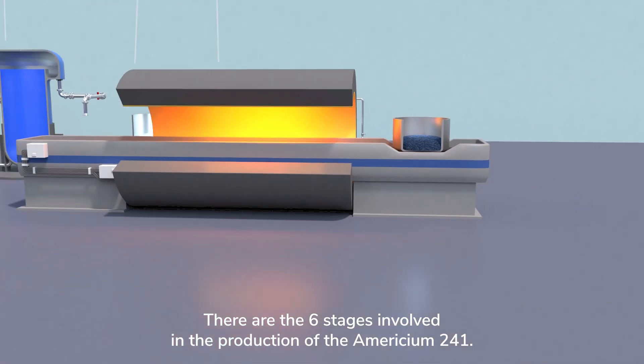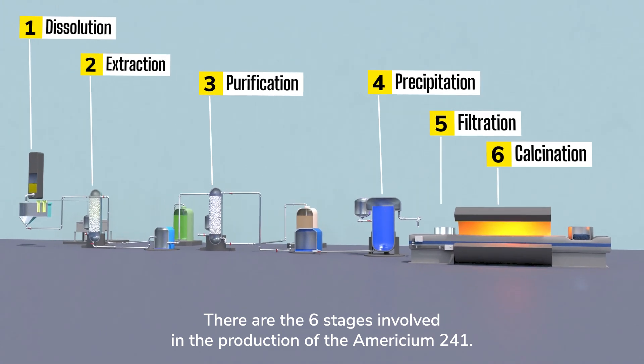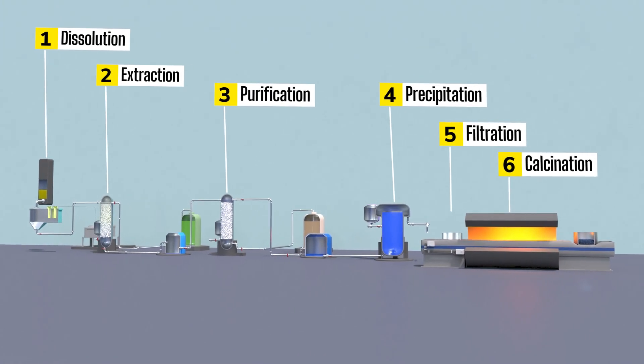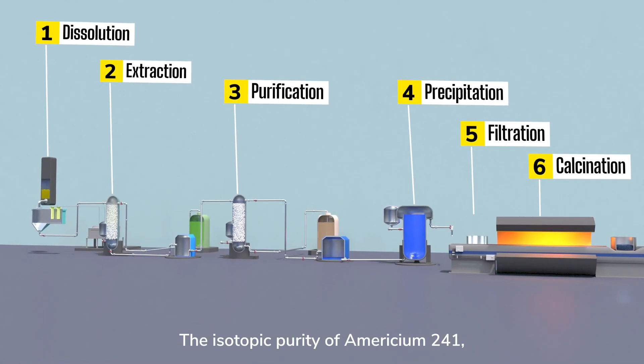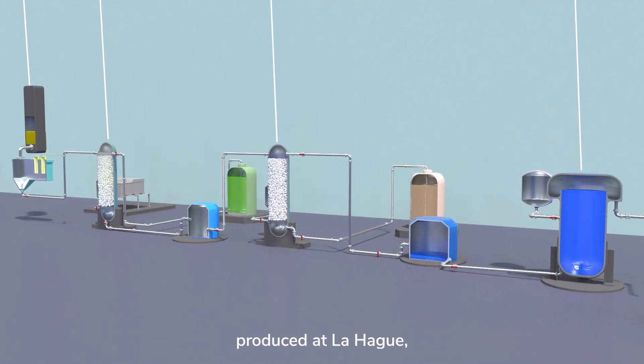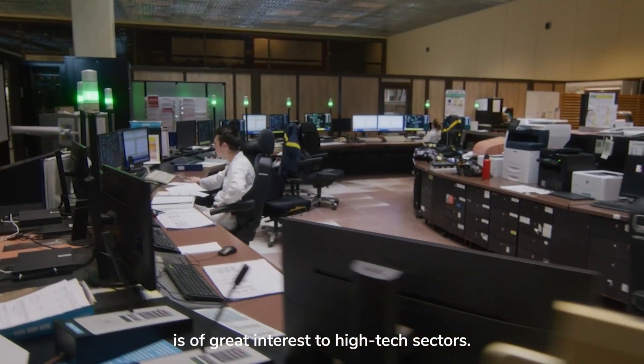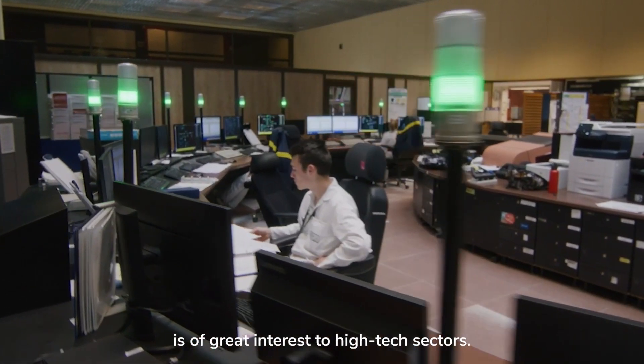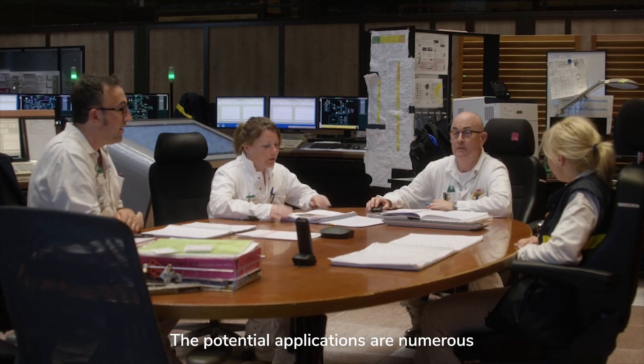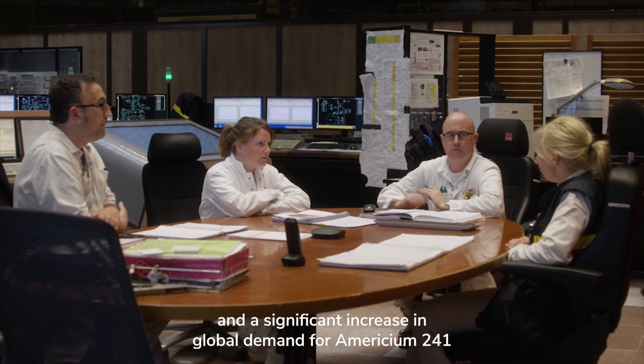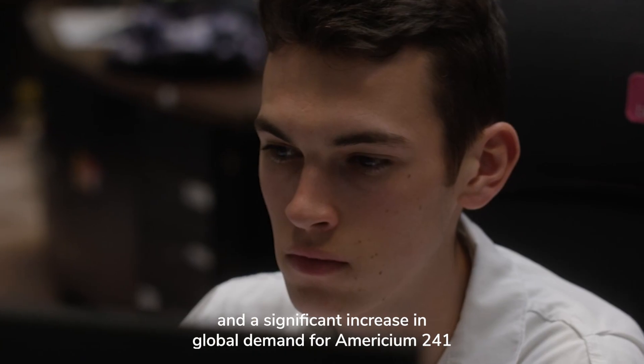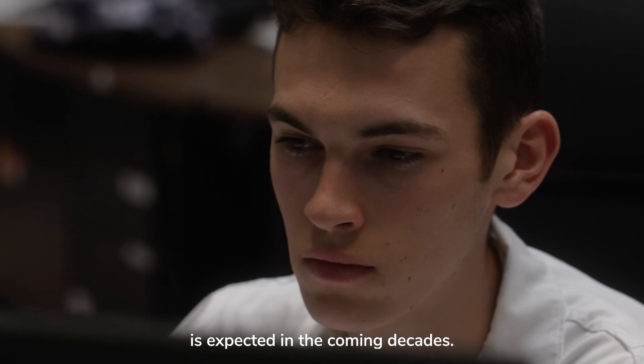These are the six stages involved in the production of Americium-241. The isotopic purity of Americium-241 produced at La Hague is of great interest to high-tech sectors. The potential applications are numerous and a significant increase in global demand for Americium-241 is expected in the coming decades.